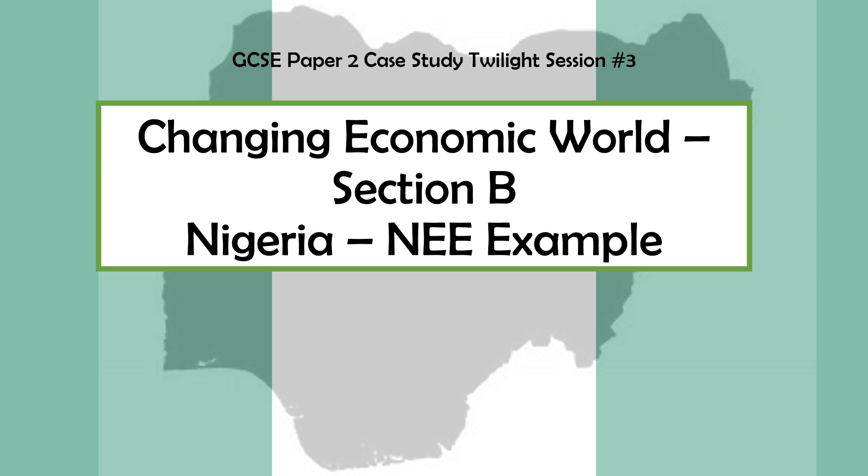We're still on Paper 2 and we are now on Section B. The last couple of twilight sessions we were looking at Section A, which was urban. We've now shifted onto Section B, which is the Changing Economic World. Everything about this section is around how money impacts the development and therefore the quality of life for the people that live there. We've got two major case studies: the first is Nigeria, our newly emerging economy example, and the second is the UK.